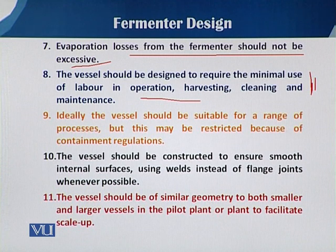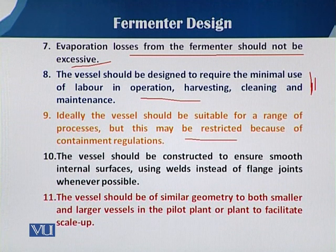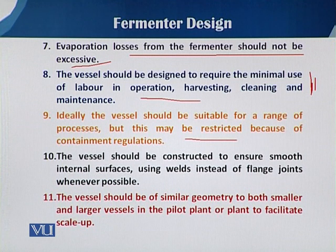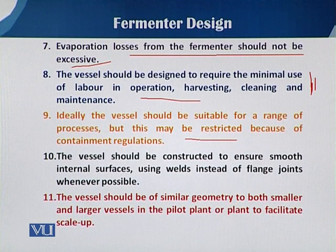The ninth requirement is that the ideal vessel should be suitable for a range of processes, but this may be restricted because of containment regulations. Keeping containment regulations in mind, the fermenter vessel should be designed in such a way that it can be utilized for a number of processes. For example, a fermenter used for citric acid production could also be utilized for enzyme production, vaccine production, and so on. The fermenter should have provisions to be utilized for different ranges of processes.